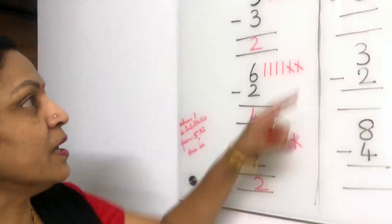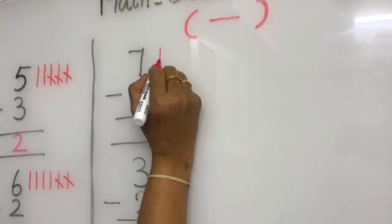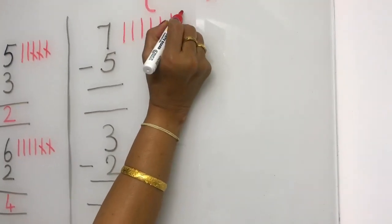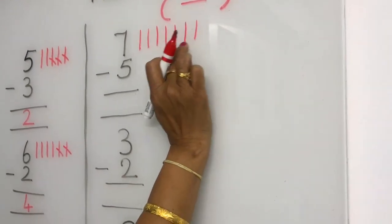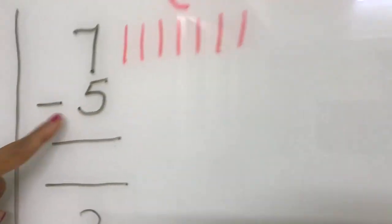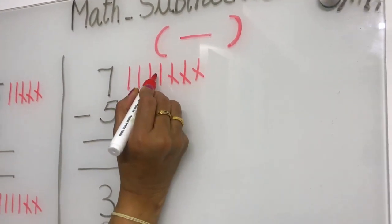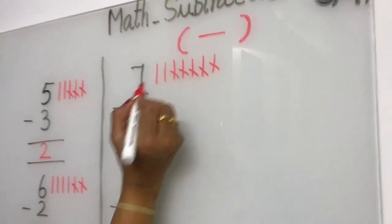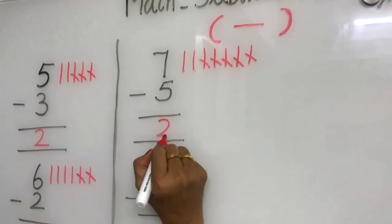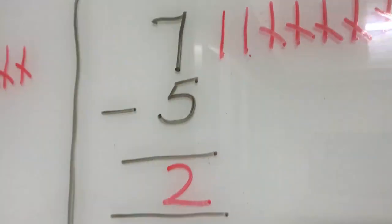See here — what is this number? Seven. We have to put seven standing lines: one, two, three, four, five, six, seven. From these seven lines, how many do we take out? Five. We take out five lines — one, two, three, four, five. How many remaining lines? One, two. Answer is two. When five is subtracted from seven, the answer is two.